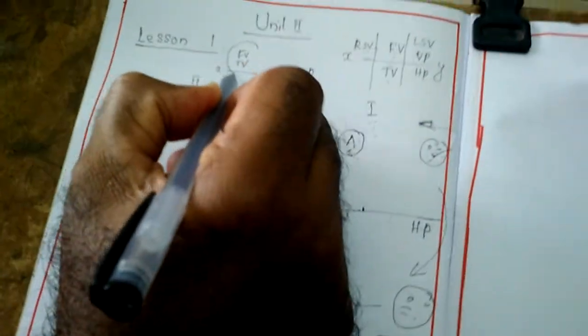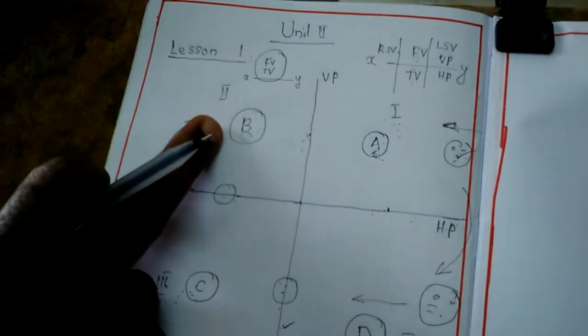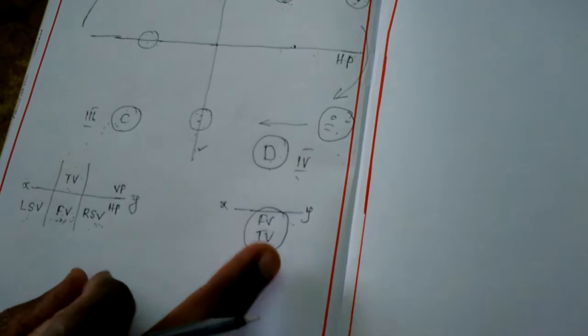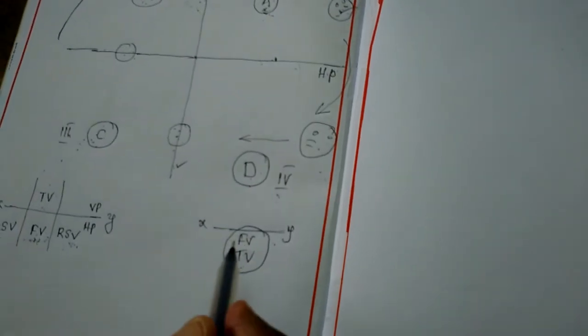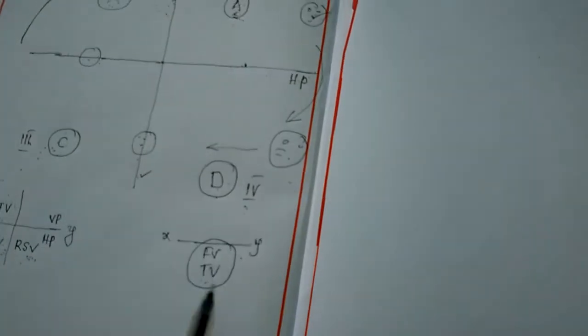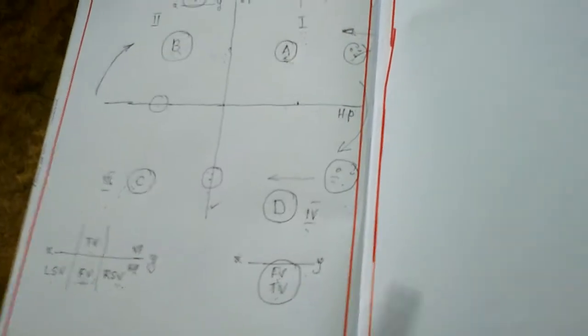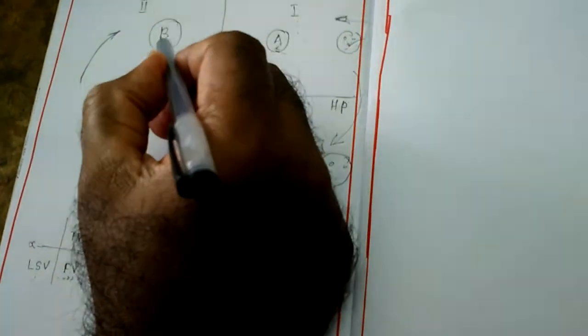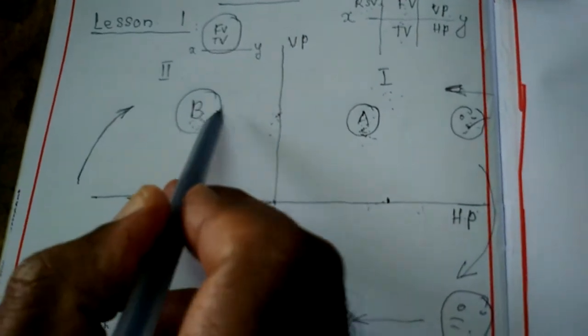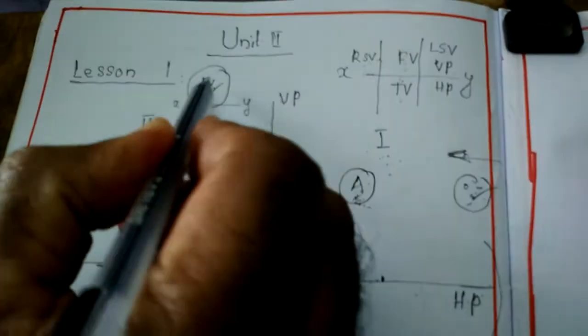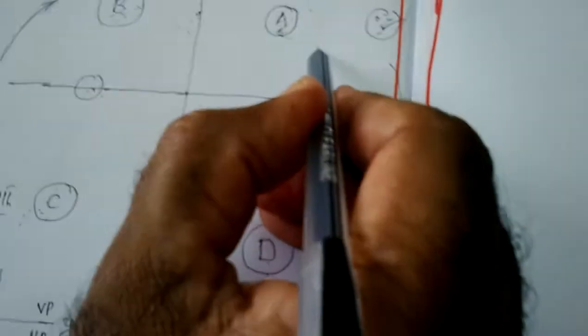In second angle projection method, the front view and top view both occupy above the XY line. The difference between second angle and fourth angle: in fourth angle, both occupy below XY line; in second angle, both occupy above XY line. When the distances from the principal planes are equal, both views coincide each other — so description and analysis are not easy. That's why we should not use second or fourth angle in general practice. Only first angle and third angle should be used.